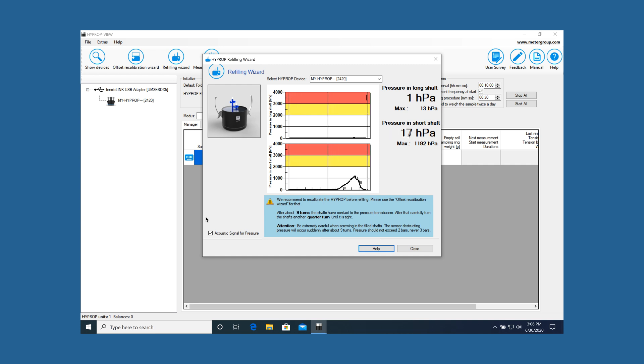This prevents air from entering the tensio shaft. If air enters the shaft, the degassing process must be repeated.